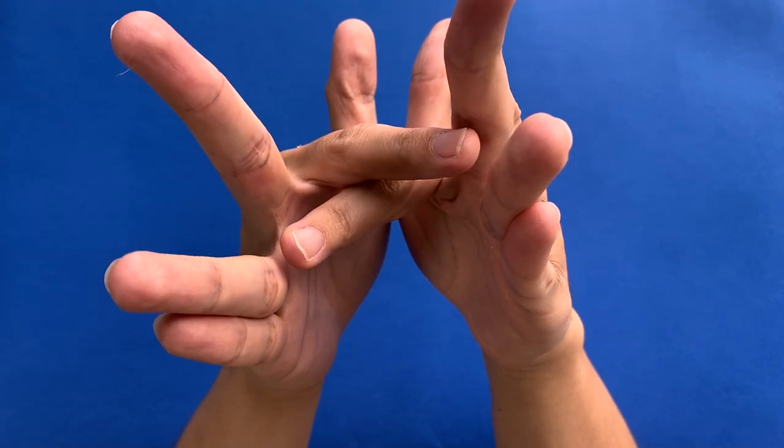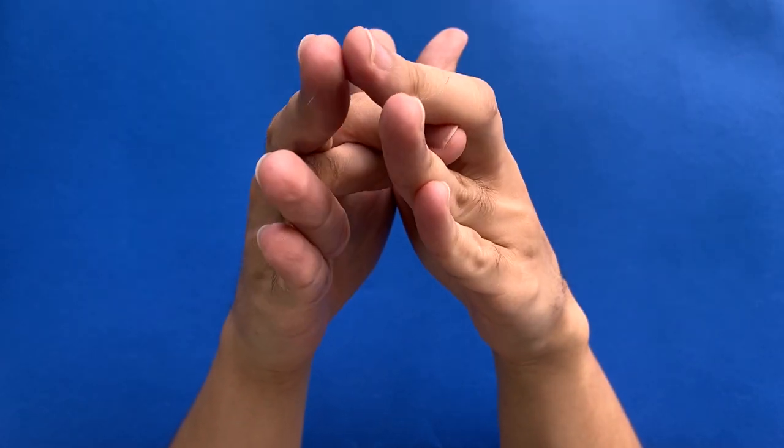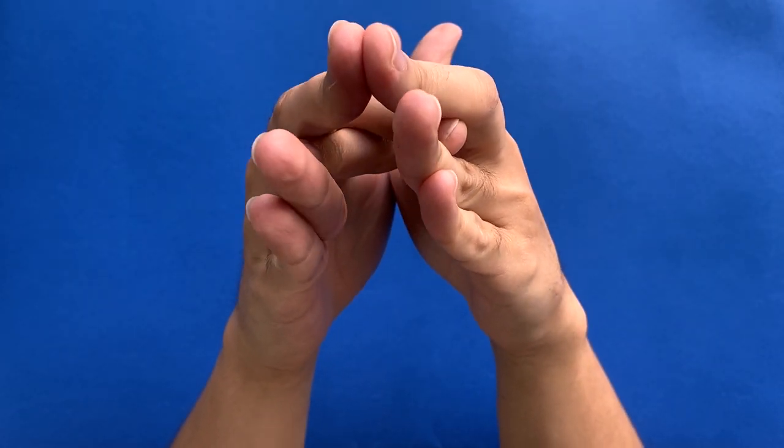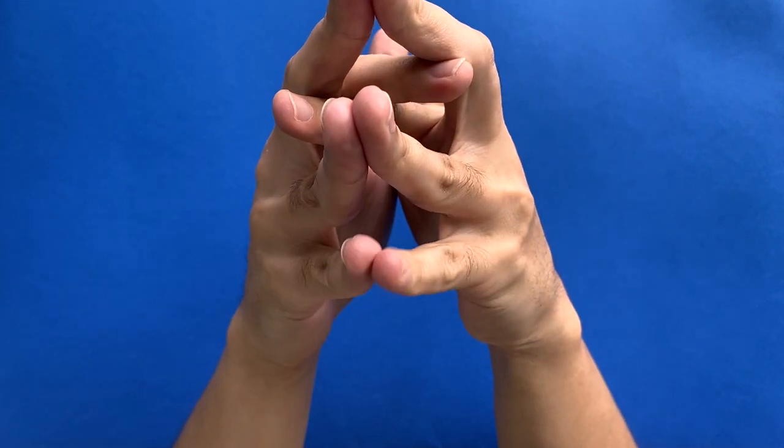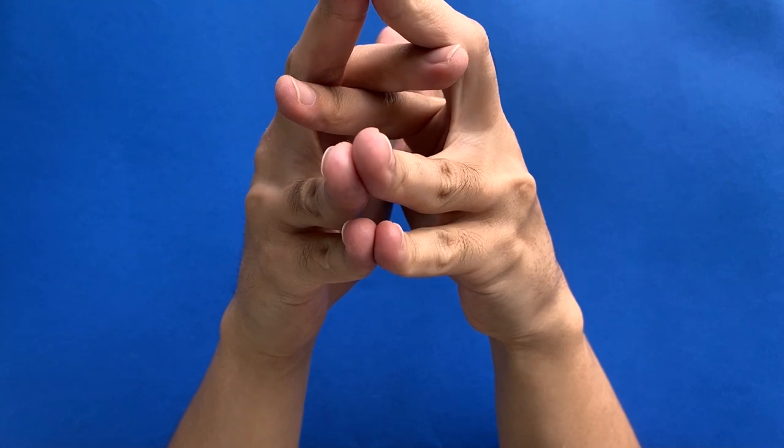Then, take your middle fingers and bring them to sit on top of your pointer fingers and touch them together. Then, touch your ring fingers and pinkies together to form the mouth of the shark.